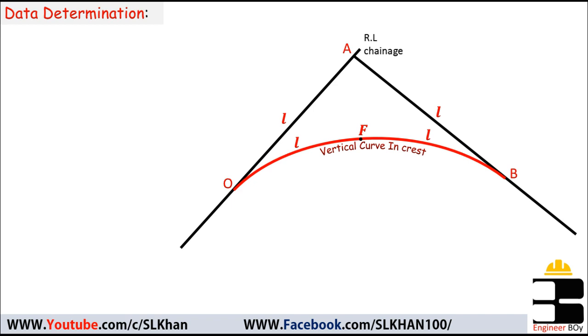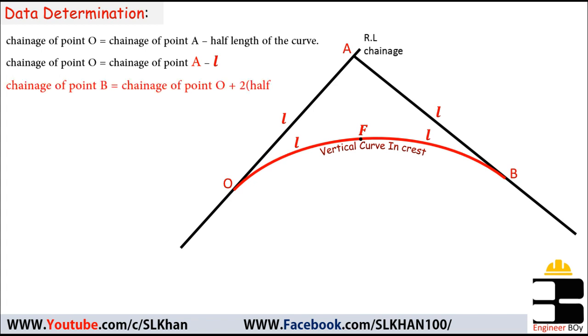The chainage of point O equals the chainage of point A minus half the curve length. The chainage of point B equals the chainage of point O plus two times half curve length, or simply the chainage of O plus the full curve length. Once we have the chainages of points O and B, we can determine the elevations of tangent points O and B.